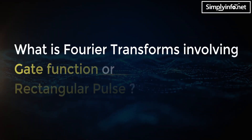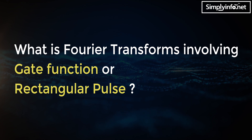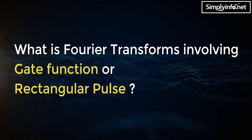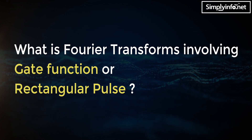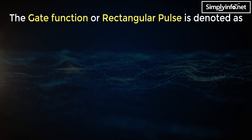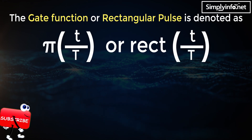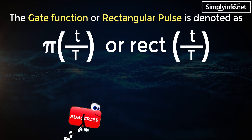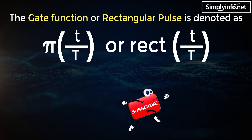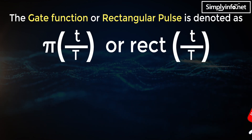What is the Fourier transform involving the gate function or rectangular pulse? The gate function or rectangular pulse is denoted as π(t/τ) or rect(t/τ).